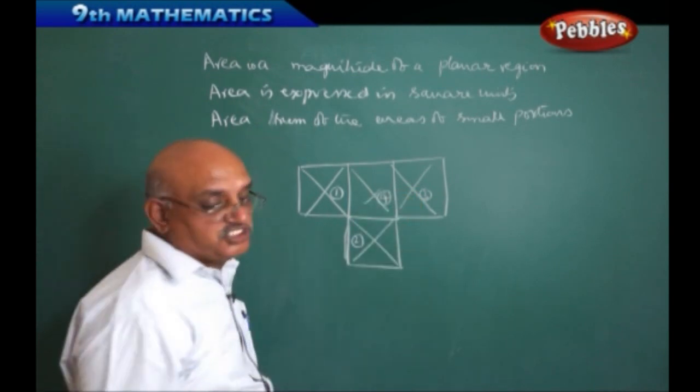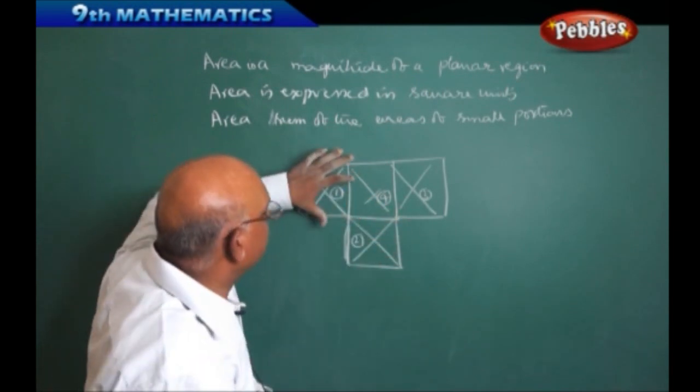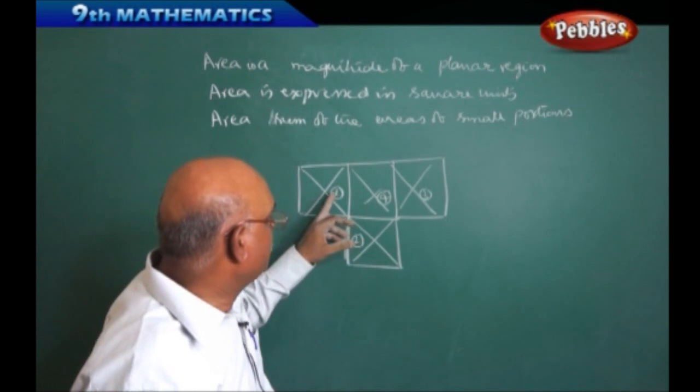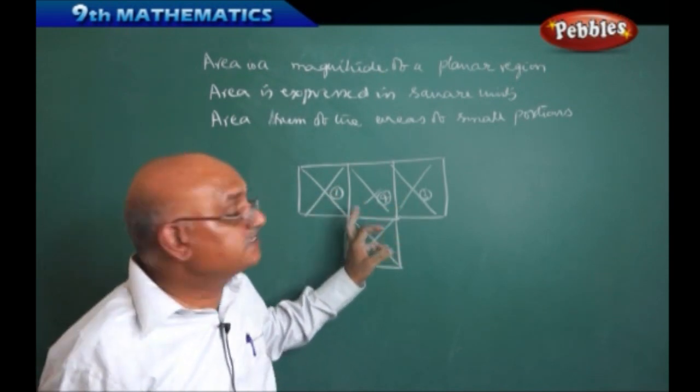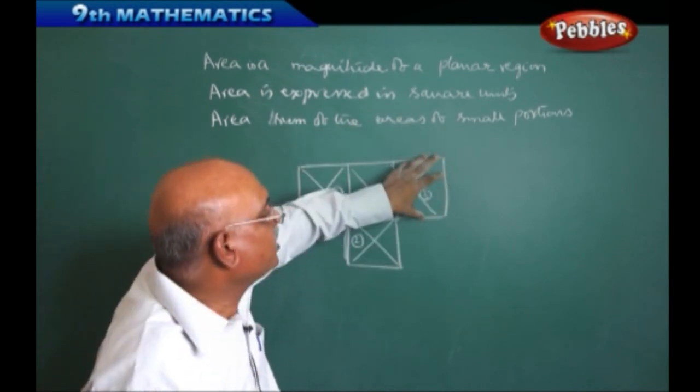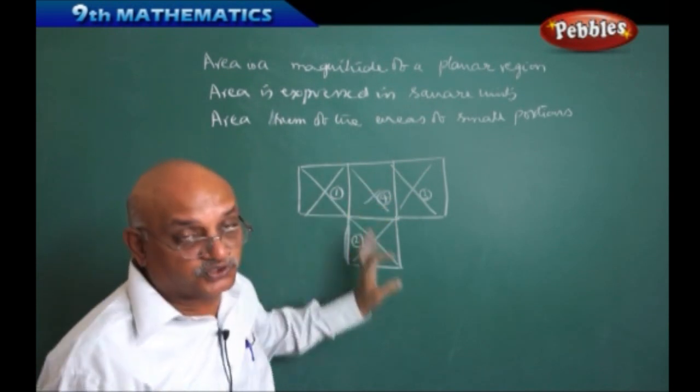Area of the T region, that is called, it is looking like a T structure. Area of the T region is sum of the areas of the four pieces: 1 plus 2 plus 3 plus 4. This is the basic area of this one. Small portions. This is one small portion. This is one small portion. Second, third, fourth one. It is small portions area.